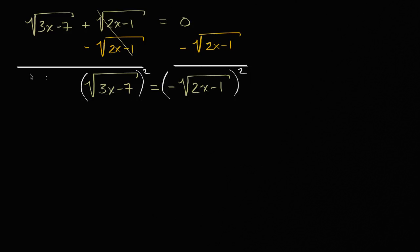If you square both sides, on the left hand side we're going to get three x minus seven. And on the right hand side, a negative squared is just a positive and the square root of two x minus one squared is going to be two x minus one.